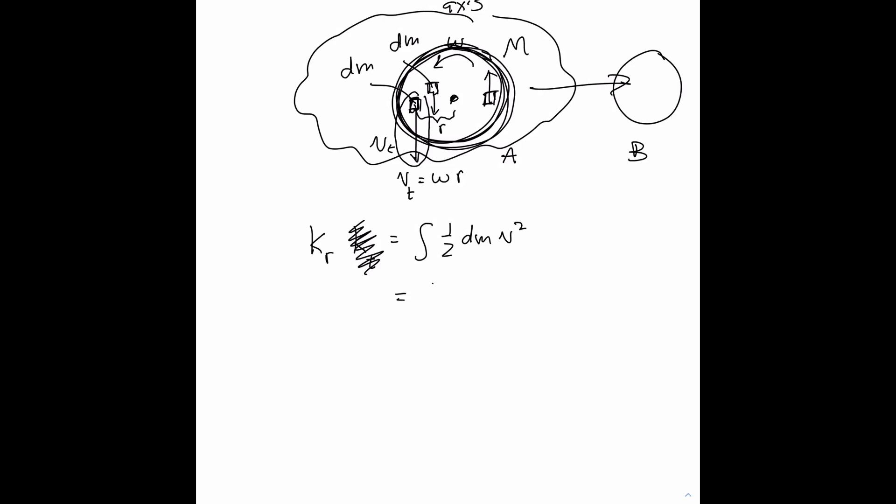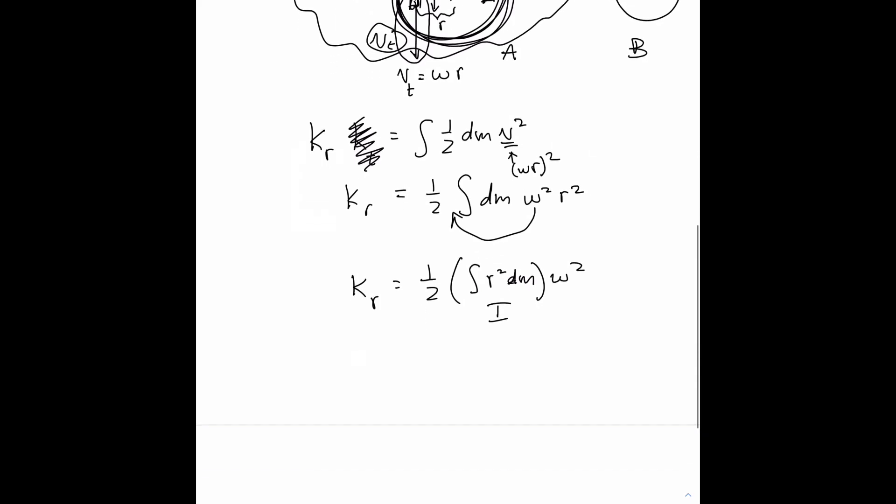So we make a substitution. We pull the one half, and we substitute for v squared. We substitute omega r, but then the omega r gets squared. So we have dm times omega squared times r squared. Every piece has a different value of tangential velocity, but each piece shares this common value of omega measured in radians per second, so that comes out of the integral. And we say that the rotational kinetic energy of the entire disk is equal to one half times the quantity integral of r squared dm, all multiplied by omega squared. And then we just define this as the quantity known as rotational inertia.